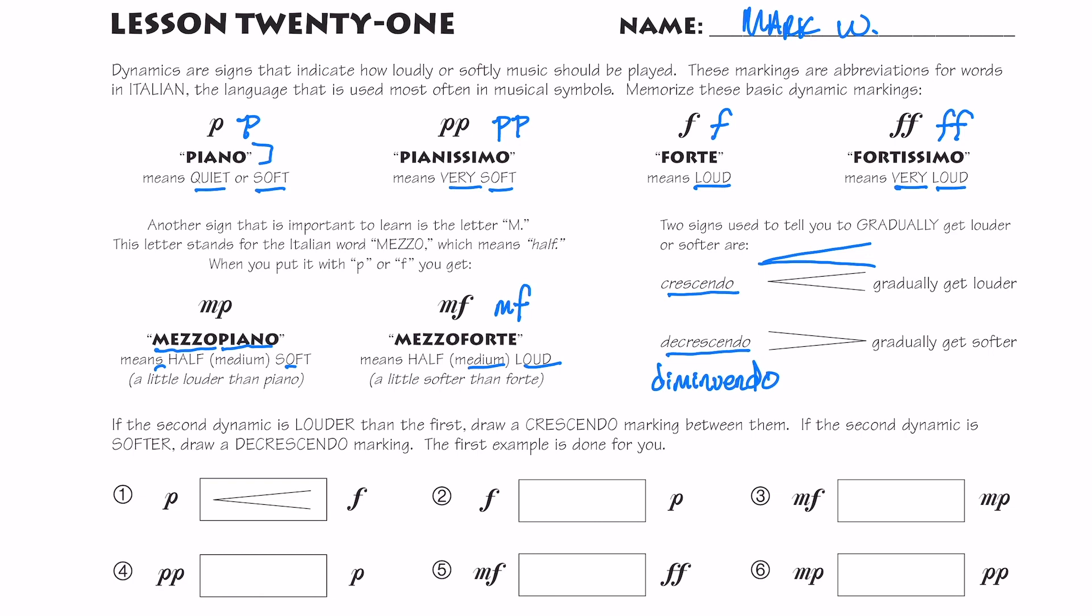So sometimes you'll see in the music, it says crescendo. Sometimes you may see it where it's abbreviated C-R-E-S-C period crescendo. You might see it with the greater than sign or the less than sign for diminuendo. You might see D-E-S-C or D-I-M for getting softer.